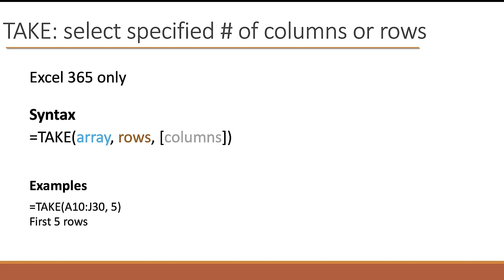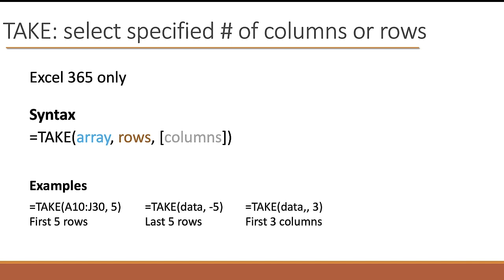Let me give you a few examples. If I say equals TAKE and put in a range address like A10 to J30 and say five, it's going to grab the first five rows. I generally prefer using range names, so I might apply a range name of "data" to that entire block. If I say equals TAKE, look at the array called data, and use minus five, I get the last five rows — a positive number means from the beginning, a negative number means from the end. If I say equals TAKE with two commas and three, the second comma is the rows argument, so nothing before it means I don't care about rows, and three means get three columns. Similarly, using a negative three gets the last three columns.